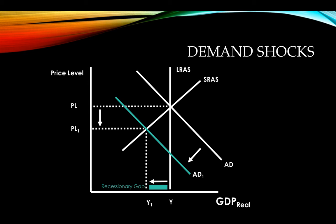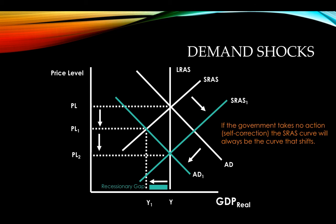How does the economy self-correct from a recessionary gap? Anytime the economy self-corrects, it's the short-run aggregate supply curve that adjusts. With lots of people looking for work, businesses don't need to increase wages — people just want a job, so nominal wages can decrease. When wages go down, that input cost falls, so we have an increase in short-run aggregate supply and work our way back to equilibrium. Price level continues to fall and output moves back to its equilibrium level. If the government takes no action, the short-run aggregate supply curve is the one that shifts.